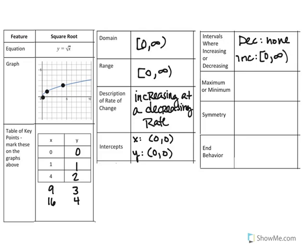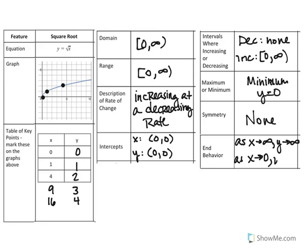The maximum or min – you could say there's a minimum here at y equals 0. There is no symmetry and the end behavior. As x approaches infinity, y is going to approach infinity. But in this case, x is not going to approach negative infinity. It's going to approach 0. And when x is going towards 0, y is also going to go towards 0.